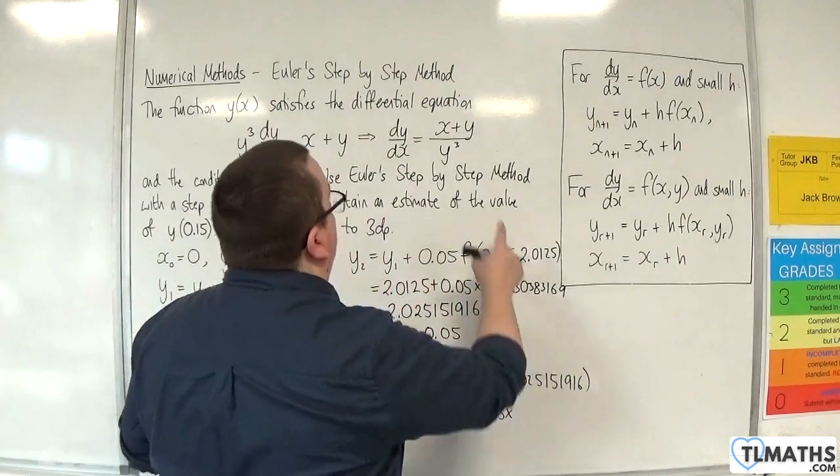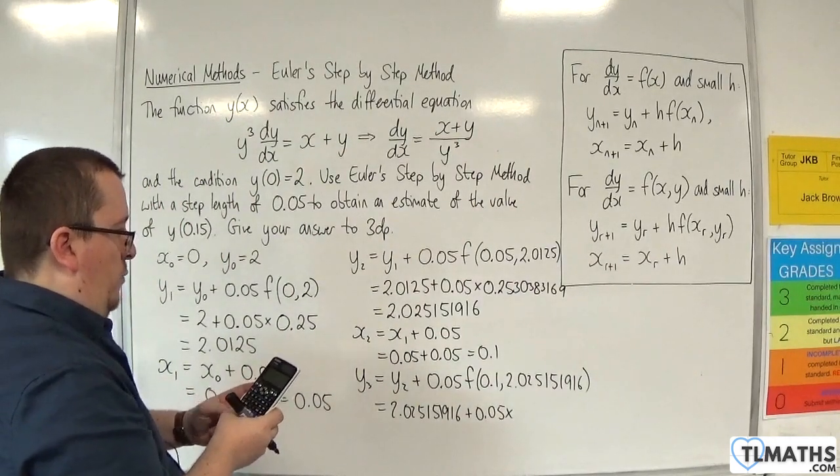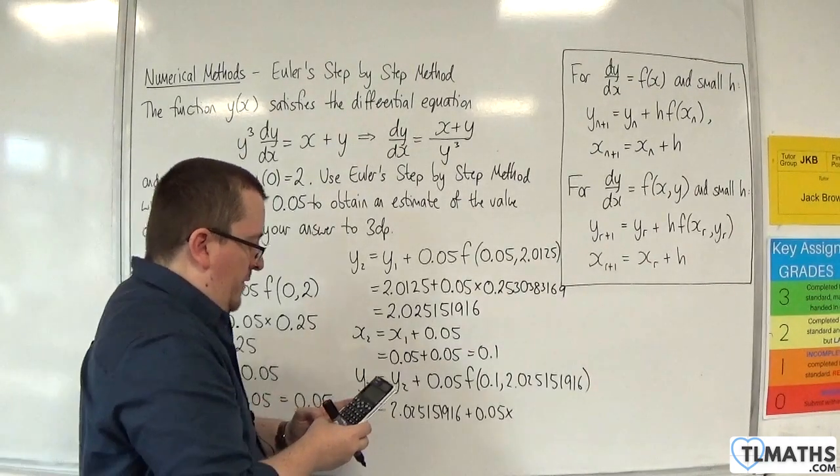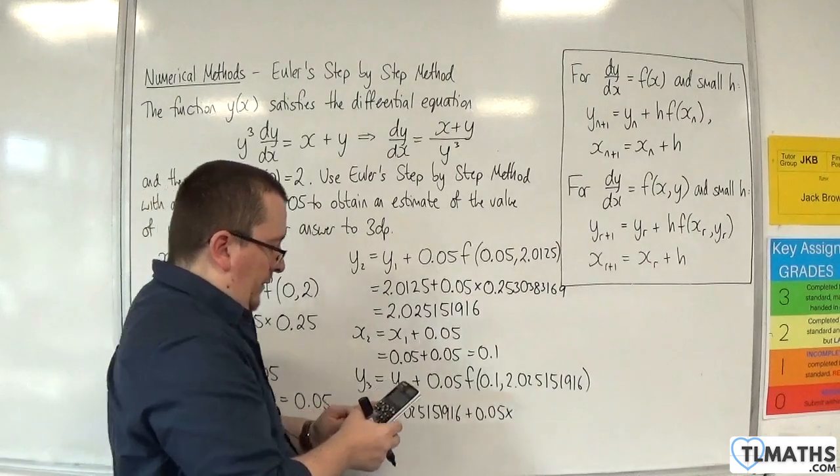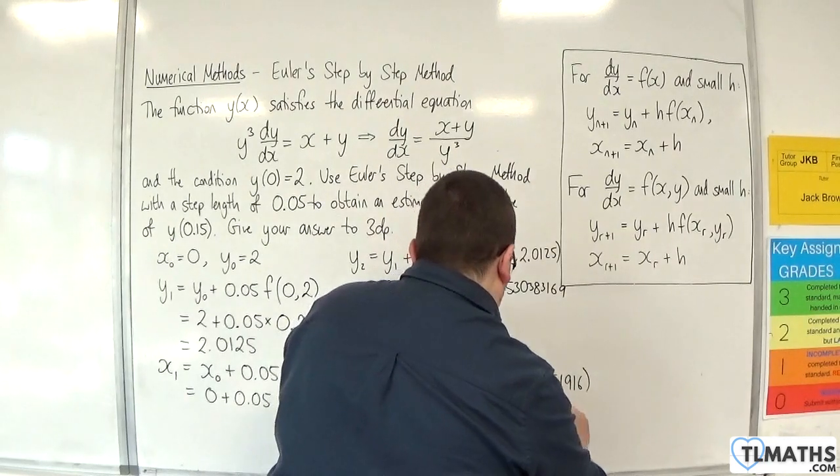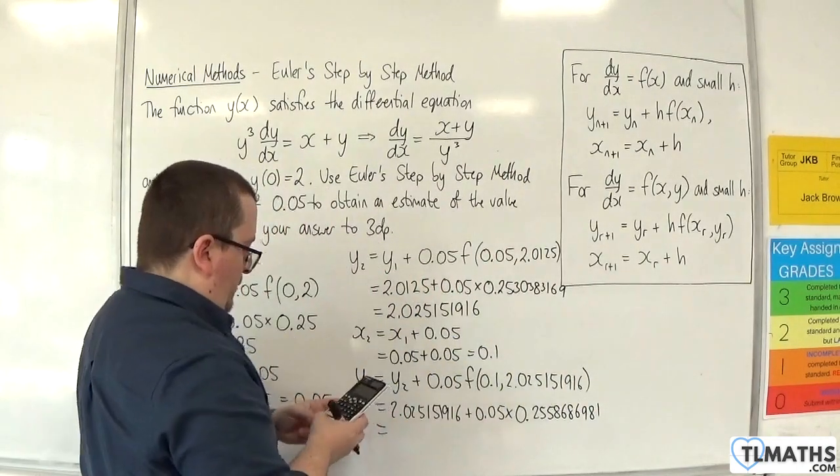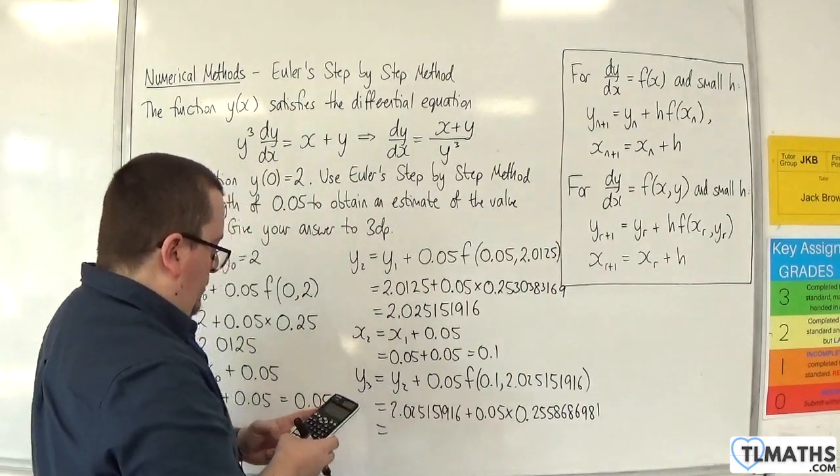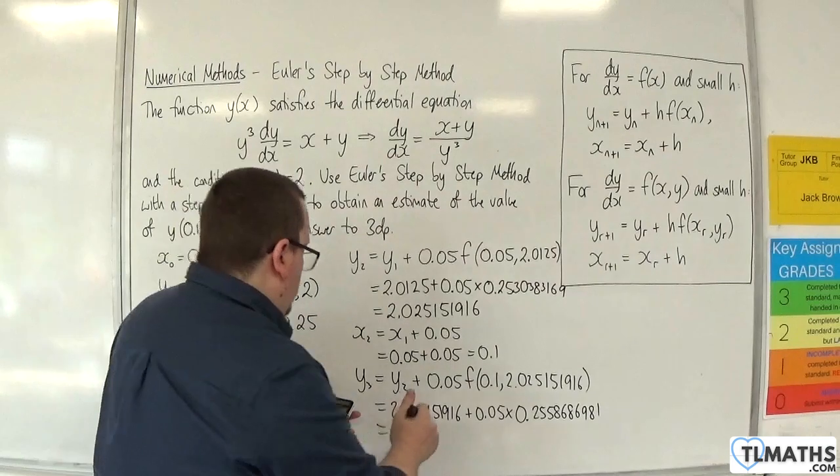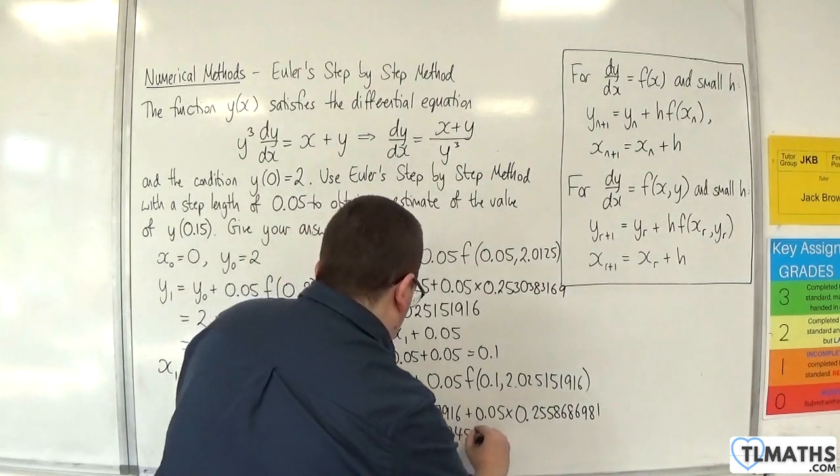So we've got (0.1 + 2.025151916)/(2.025151916³), which is 0.25586869181. Now I'm timesing that by 0.05 and adding on 2.025151916, and we get 2.037945351.